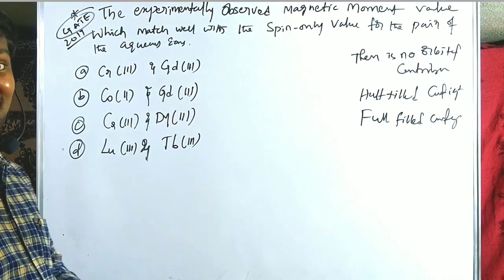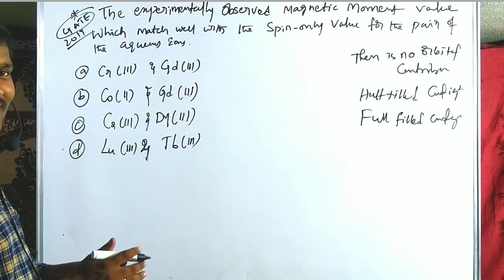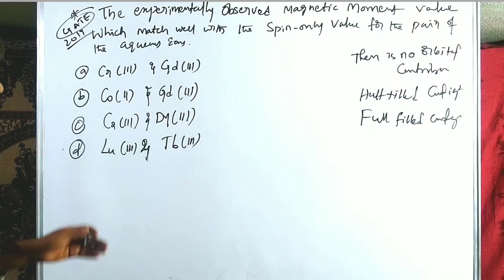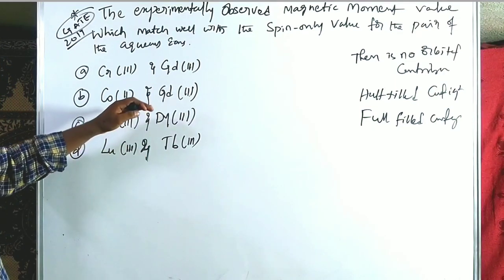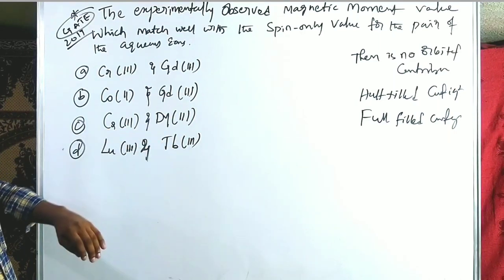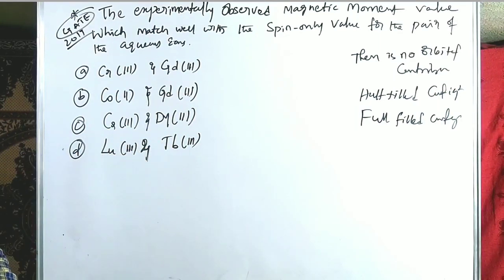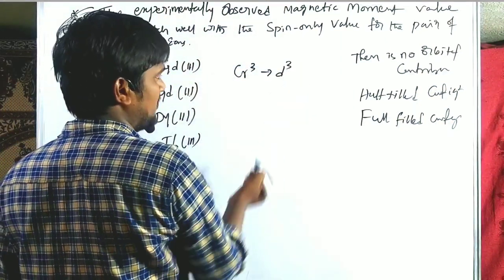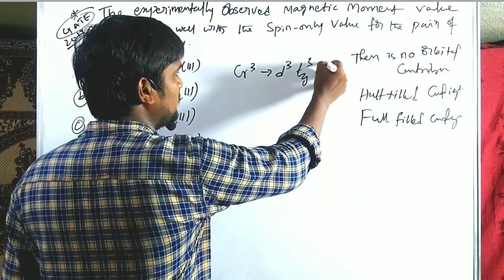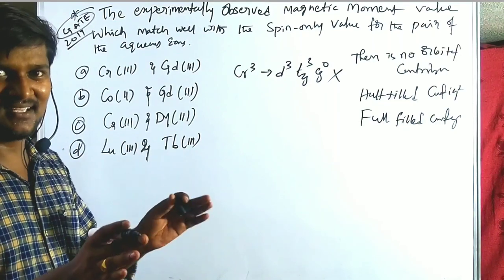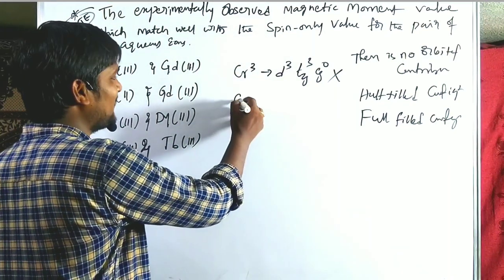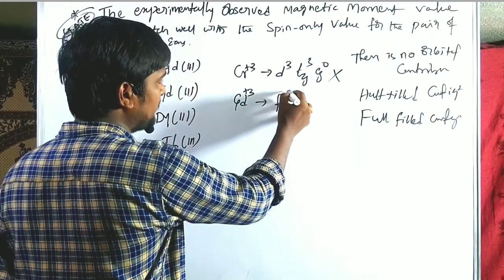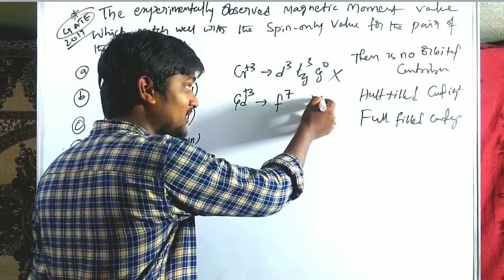Option A is Chromium³⁺ and Gadolinium³⁺, which are f-block elements, so we need to remember electronic configurations of lanthanides and actinides. Chromium³⁺ is d³ configuration, meaning t₂g³ eg⁰ — there is no orbital contribution, very close to what we expect. Gadolinium³⁺ is f⁷ — half-filled — so there is no orbital contribution either.